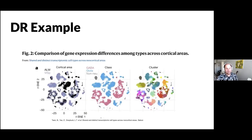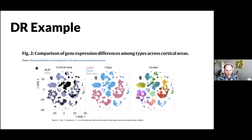Here is an example from a Nature paper showing a t-SNE plot color-coded in three different versions overlaying categorical aspects. You can see that different groups — like red and blue — are nicely separated. This shows that t-SNE has revealed something that is biologically relevant.